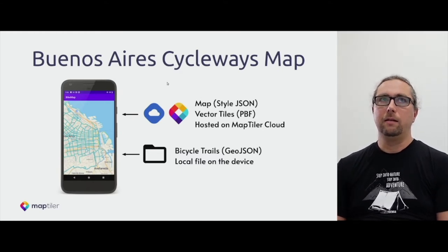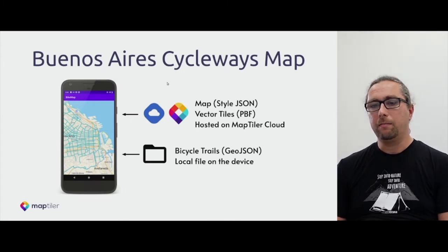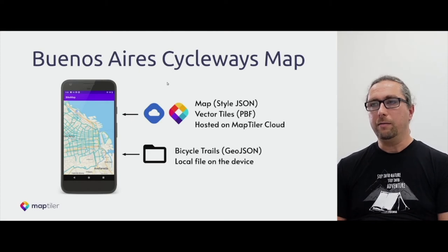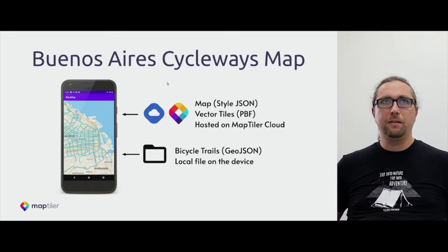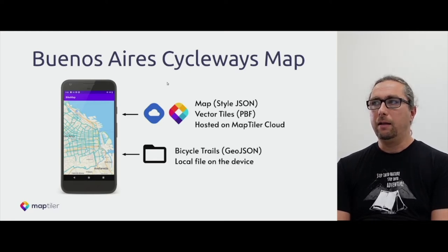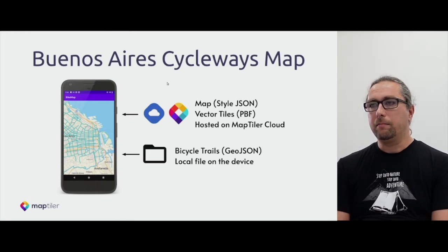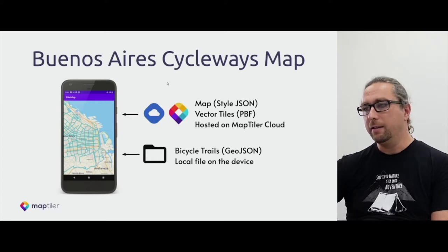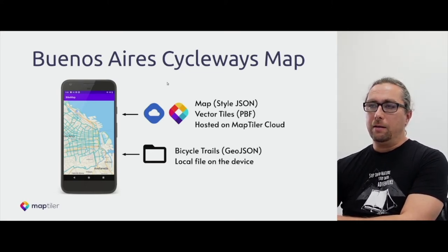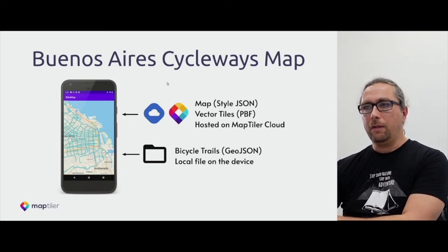The example is similar to the one introduced in the workshop on Monday. It's a simple Android application — I selected Android rather than iOS because I think it's more open source. The application initializes the map control, loads the map style, parses GeoJSON from local assets, and puts it on the map as a vector source and vector layer. There is a link at the end of this presentation to GitHub with the source code and tutorial.